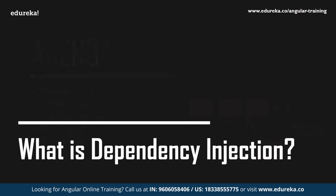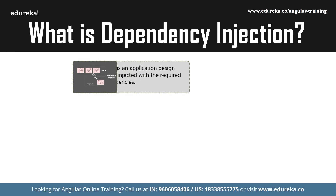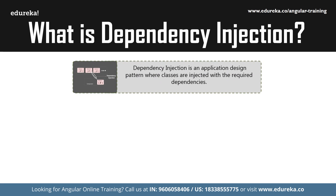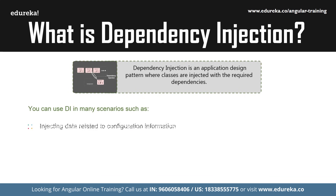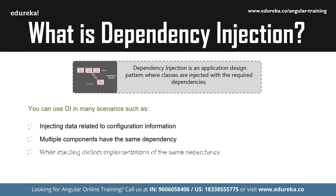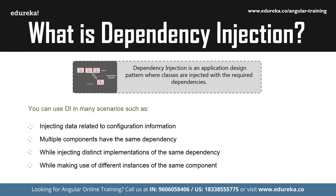So what exactly is dependency injection in Angular? Dependency injection is a vital application design pattern. In this coding pattern, classes are injected with the required dependencies rather than hard coding them within the class itself. These dependencies are usually objects or services that are required by the component class. When exactly should you use DI? Dependency injection is a robust technique that can be incorporated into the logic of an Angular application in multiple situations.